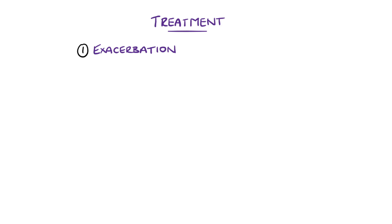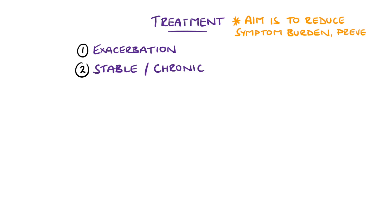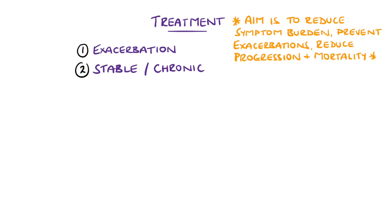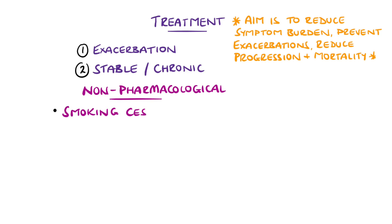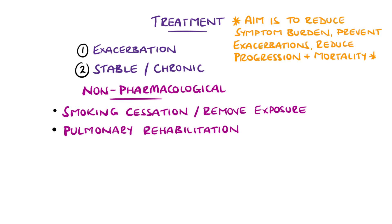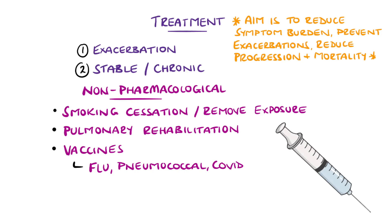The overall aims of treatment in stable COPD are to reduce the symptom burden, as well as the number and severity of exacerbations, and to reduce mortality. First-line measures include smoking cessation or removal of exposure to the damaging substance, shown to be the factor with the greatest capacity to influence the course of the disease. Pulmonary rehabilitation includes aerobic exercise, strength training and education, and vaccines — for example flu, pneumococcal and more recently COVID vaccines — are also first-line measures.